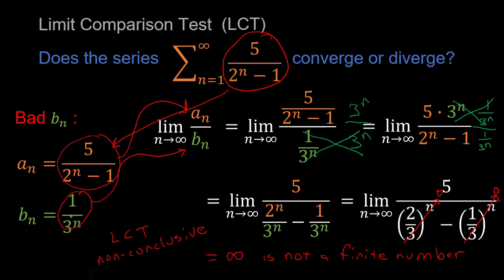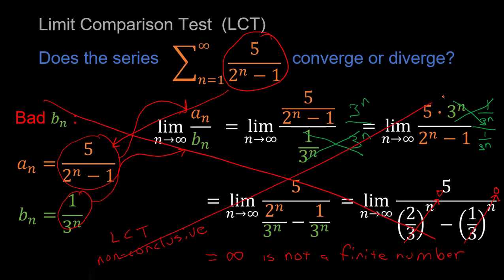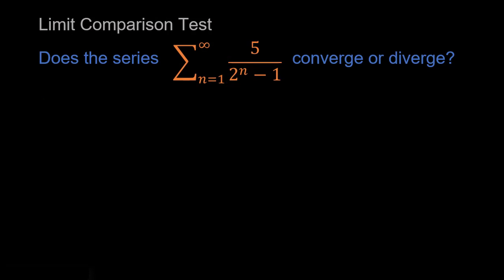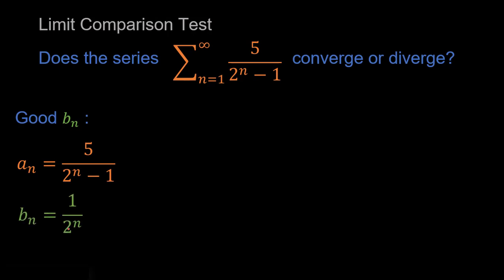That was just an example of choosing a bad b sub n so you know what happens and to motivate why it's important to pick the right b sub n term. We've got to find a b sub n that matches this denominator better. Now let's find a good b sub n. Our a sub n stays the same, and now we're going to choose b sub n equal to 1 over 2 to the n, which matches the dominant term in the denominator better than 3 to the n does.